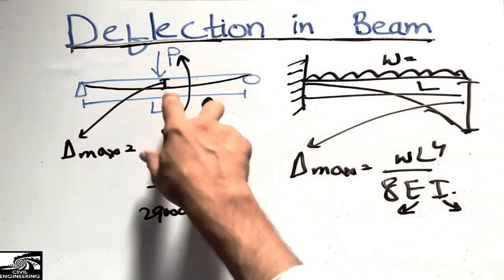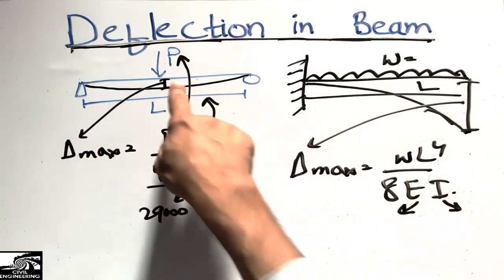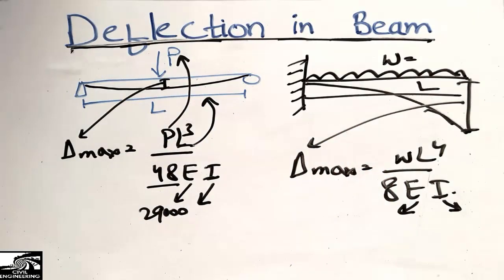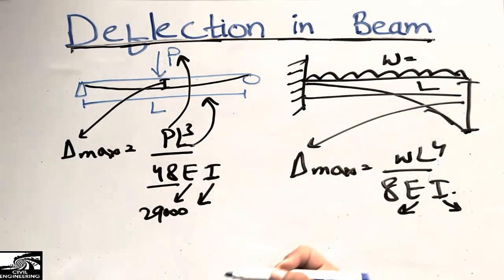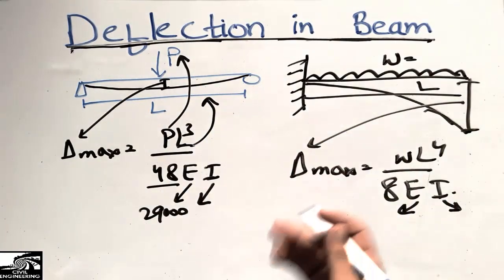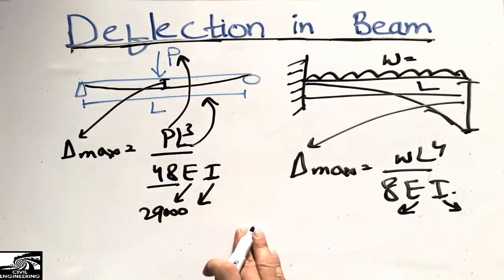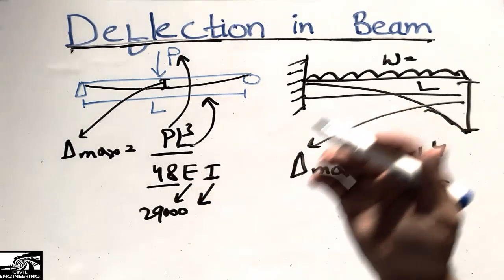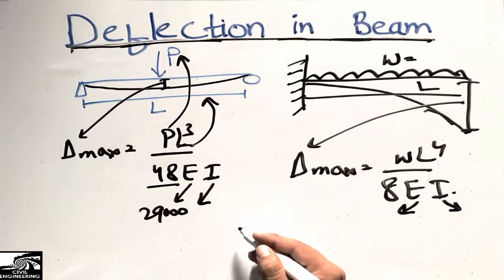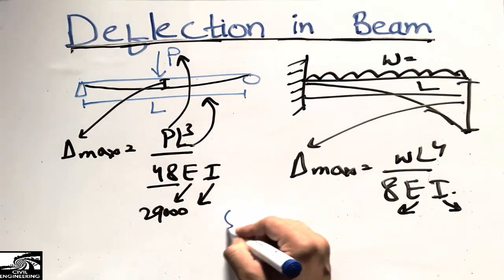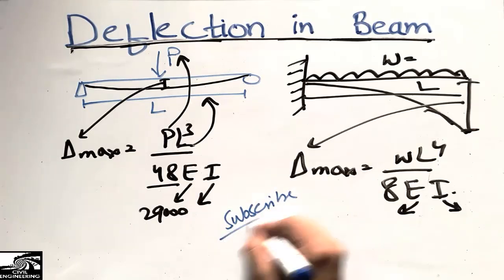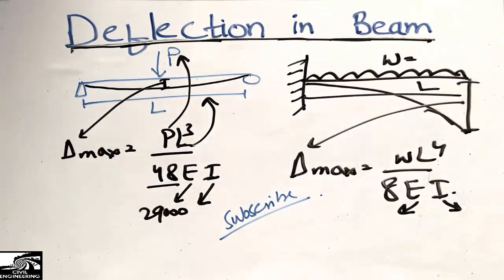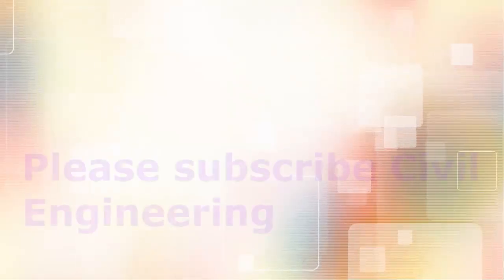This covers the deflection of beams and the deflection limits provided by the ACI. I will upload more videos on different topics in civil engineering — don't forget to subscribe to our channel for more civil engineering updates. Thank you.